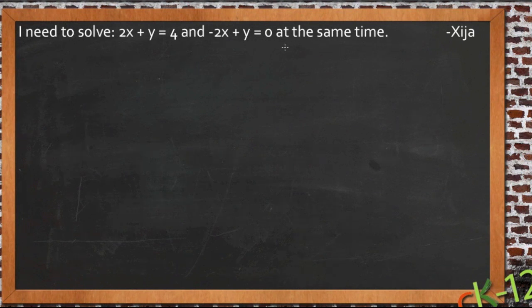So Zyja wrote in, and he needs some help solving a system of equations. His question was actually a little longer than what I pasted here, but he basically said he didn't understand elimination and wanted a little help understanding it, and that he needed to solve this pair of equations right here, 2x plus y equals 4 and negative 2x plus y equals 0 at the same time.